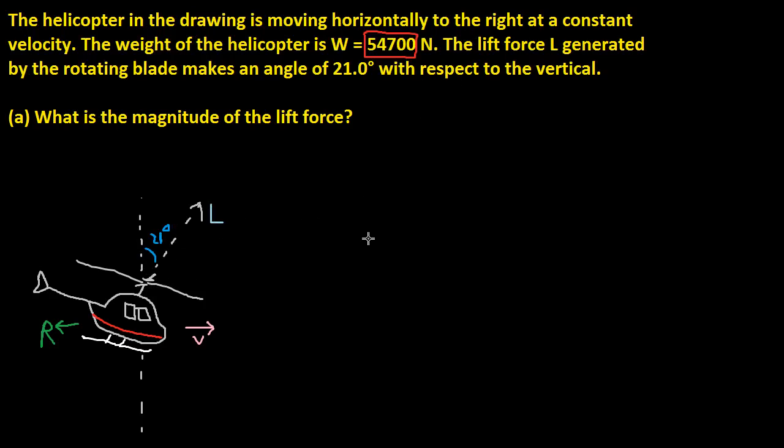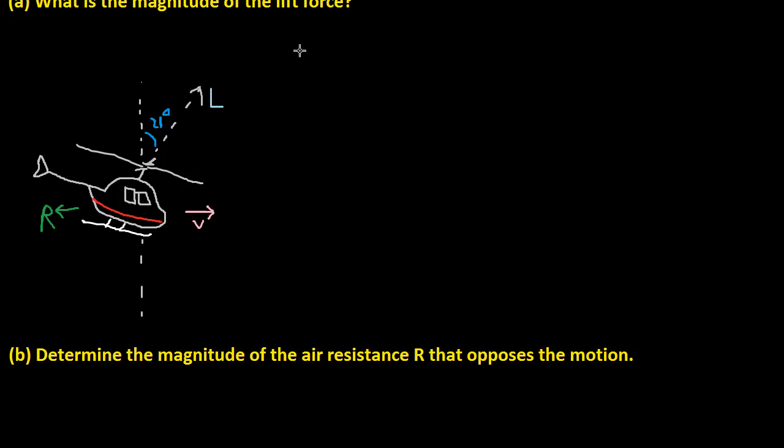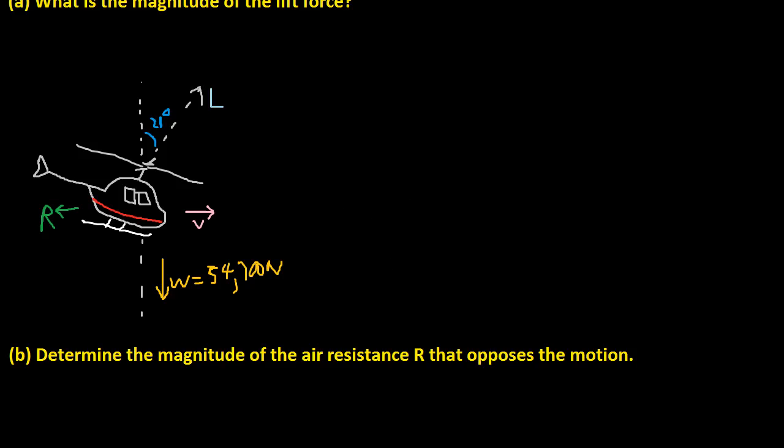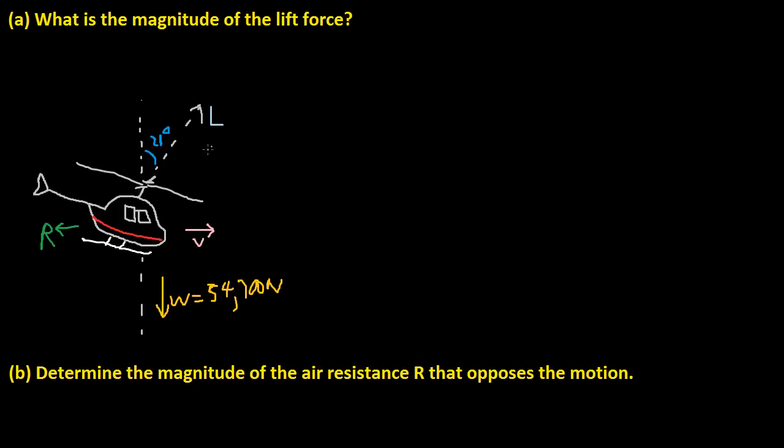So we know that the weight going downward, this is our free body diagram, the weight downward is equal to 54,700 newtons. I'm about to sneeze. Oh, I didn't sneeze. If I sneeze any time soon, just pardon me. Anyway, let's go back to our problem.